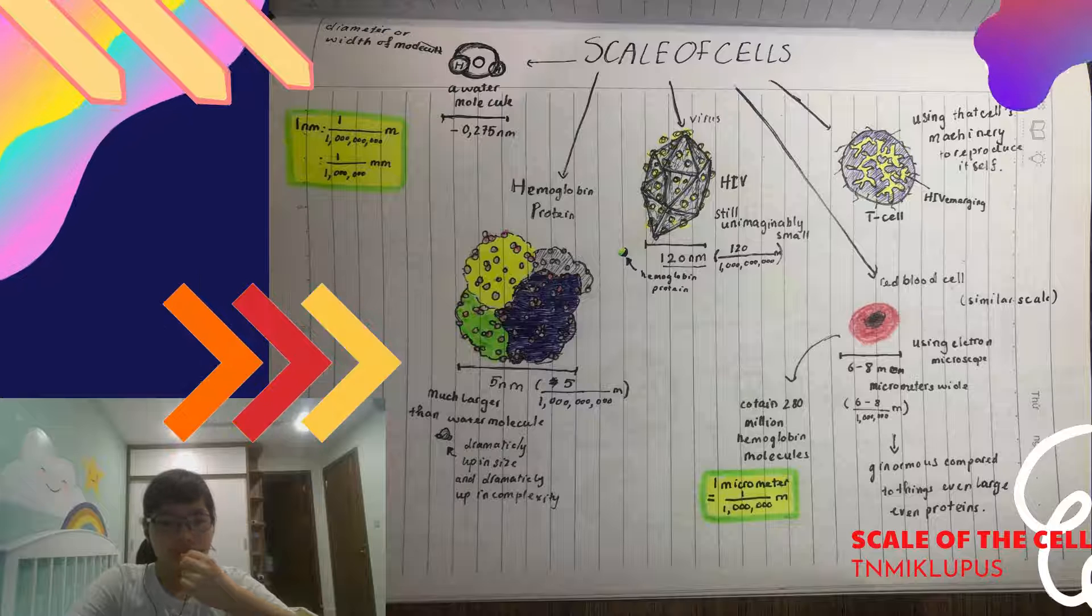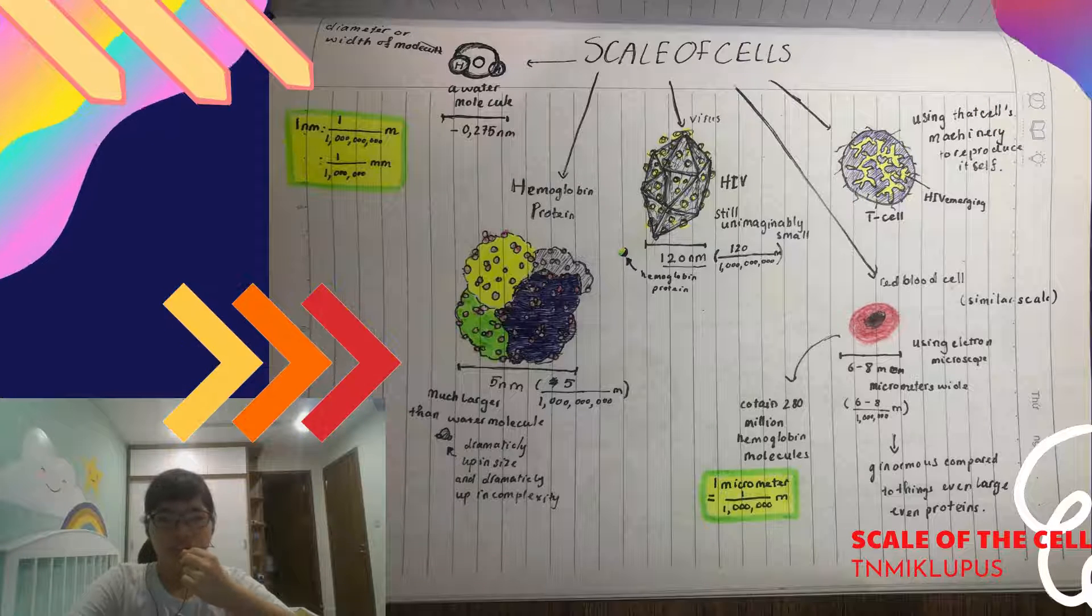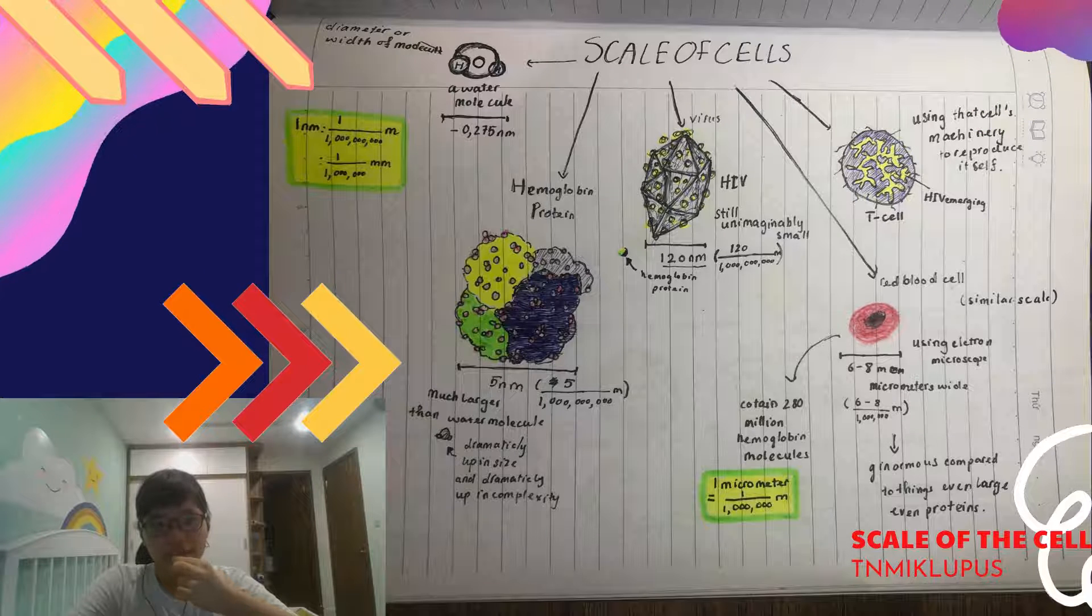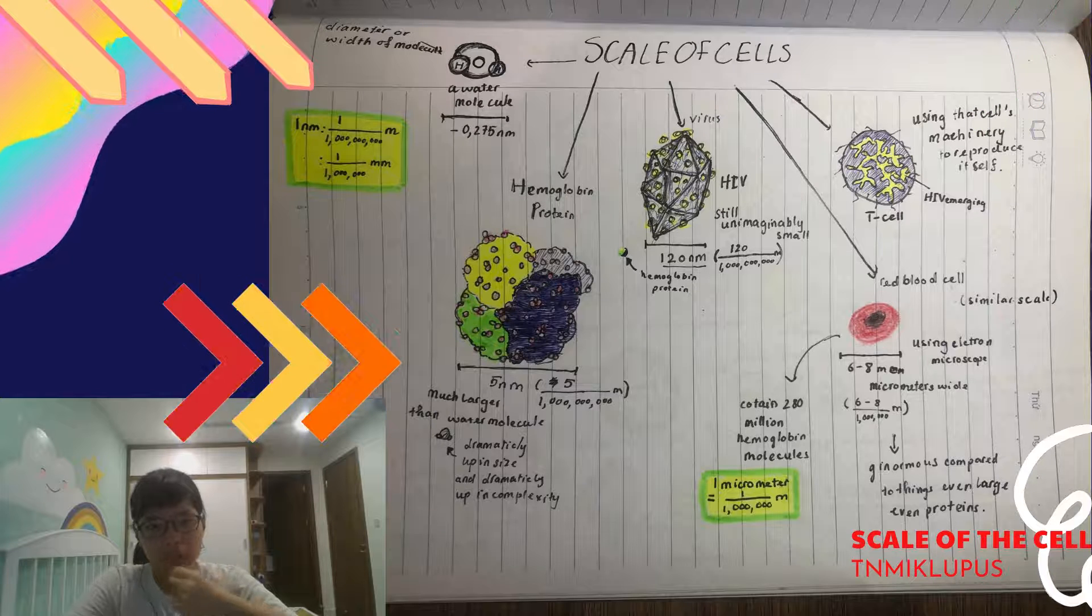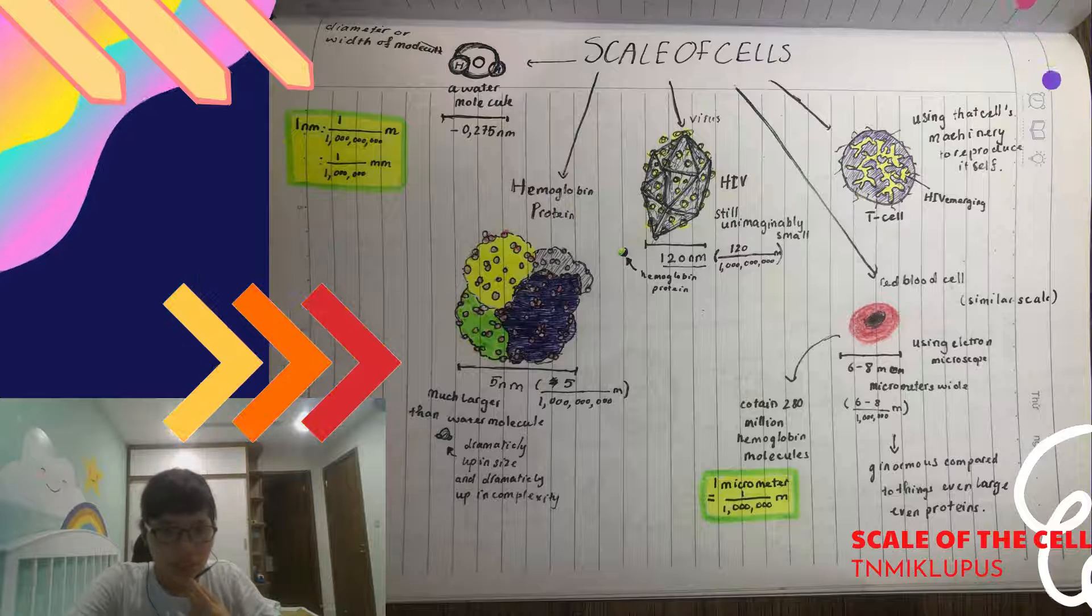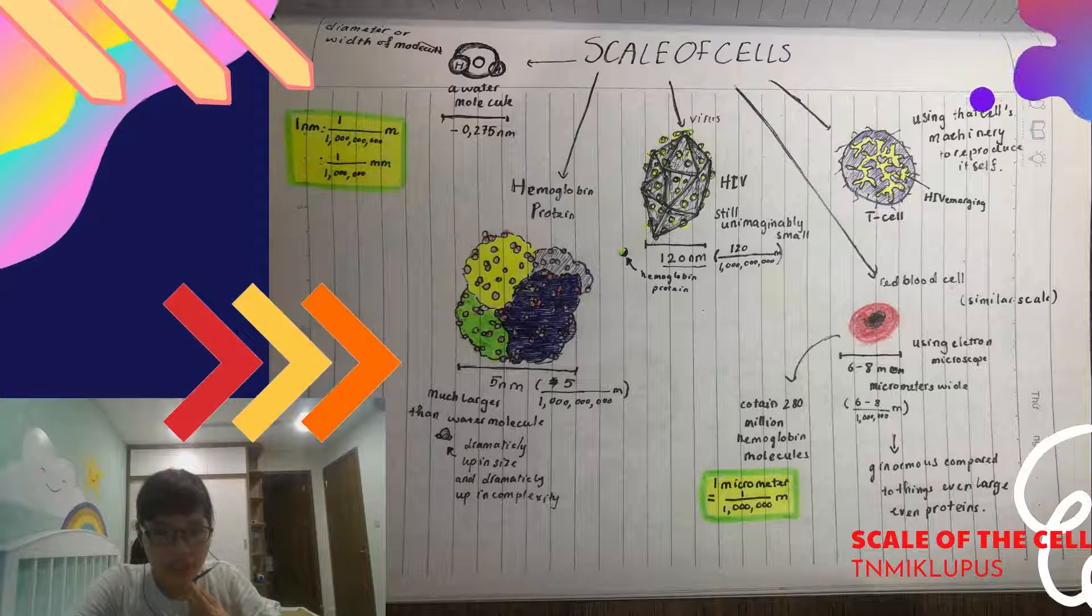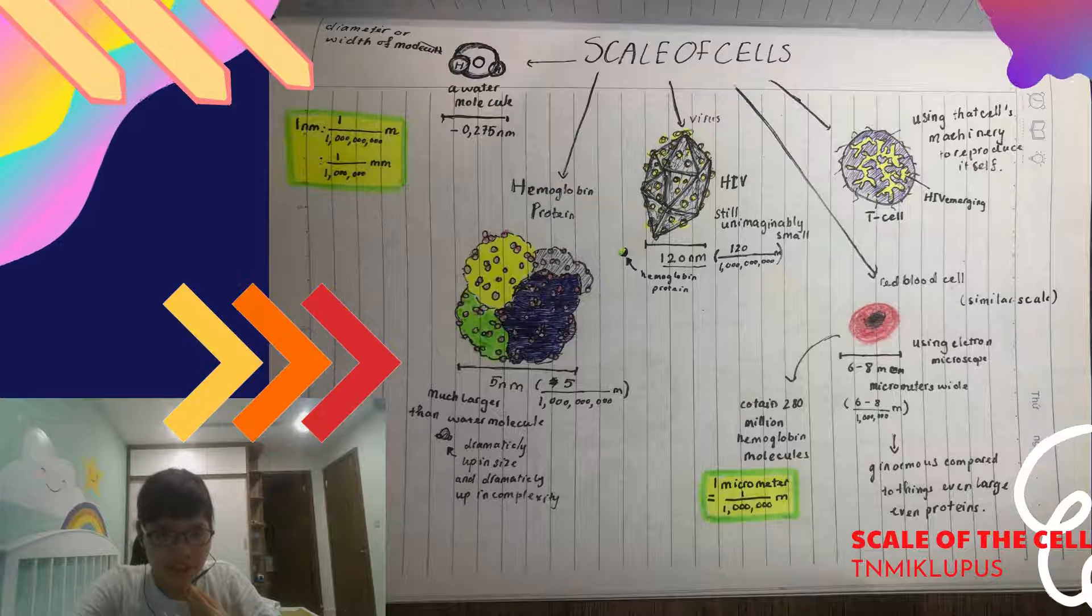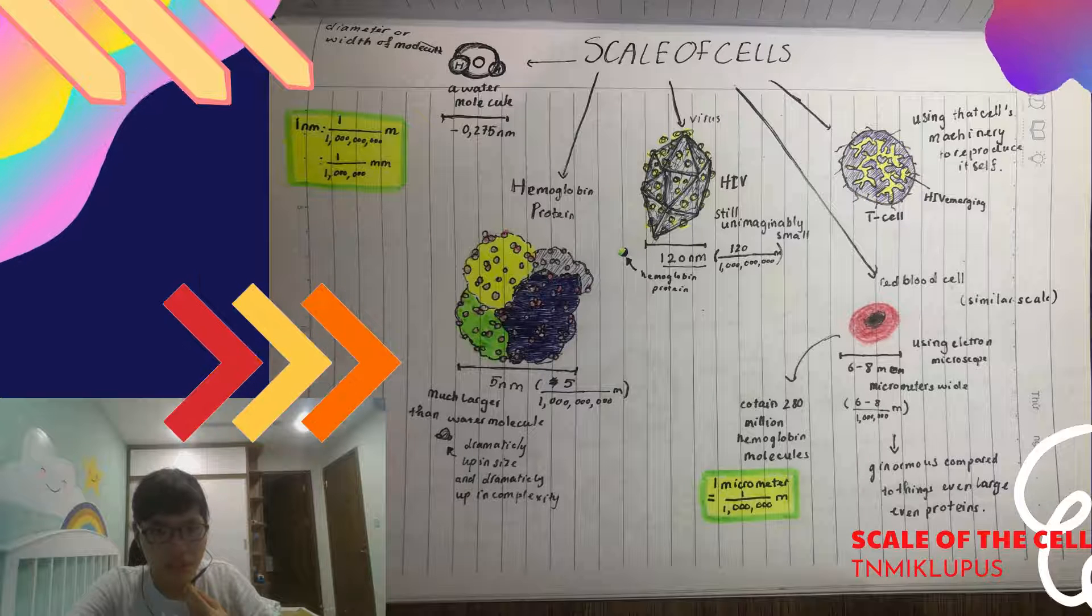Now let's go to the next scale. This is a virus. Of course, you know it is HIV and it is 129 nanometers. That is 100 billionths of a meter. And the hemoglobin over there is very small and you can see the water molecule is even smaller.